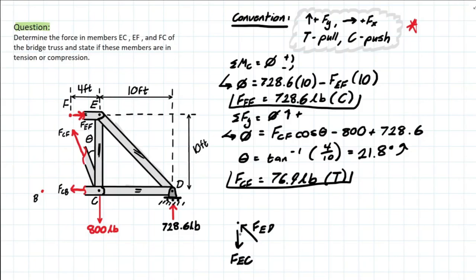So, we have the free body diagram at joint E looking something like this. And this will be 728.6, like we solved for earlier. In compression, we're pointing to that joint E. And we're going to be solving for FED and FEC.